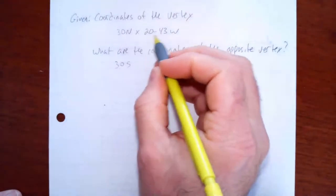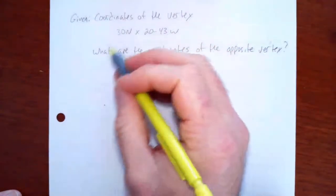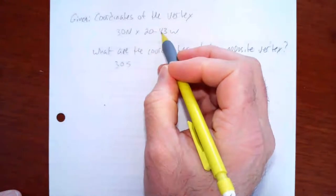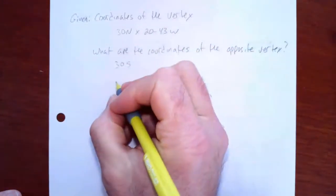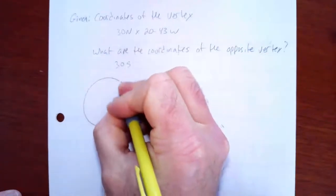Well, essentially the longitude will be 180 degrees different from the longitude in the northern hemisphere. So to help me understand this, what I'm going to do is I'm going to draw a diagram from a polar perspective, a polar diagram.